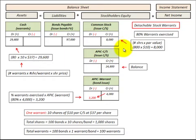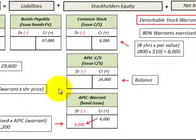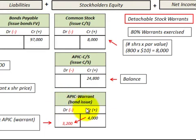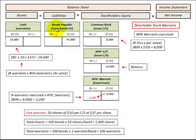Let's look at detachable stock warrants when they're exercised. These detachable stock warrants are traded separate from the bond. When those warrants are exercised, we debit cash by the purchase price of the stock on those warrants. The equity account we were carrying for that warrant value is reduced by the amount of the warrant. The balancing entry between cash and the reduced equity account goes into common stock and additional paid-in capital. The bonds payable is not affected at exercise because the warrants are traded separately from the bond.